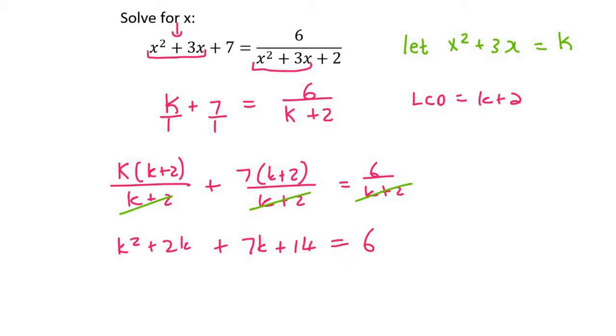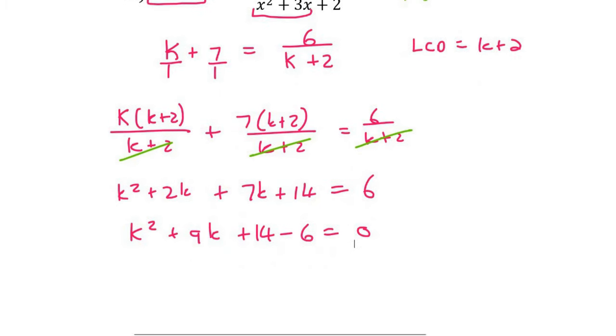So we're happy because we don't want to get that. Now we're just going to solve for k, pretending that it looks like it's the same as x. So I'm going to bring this 6 over. And so that would give us k squared plus 9k plus 8. Now, this can easily be factorized as k plus 8 and k plus 1. So therefore, k is minus 8 and k is minus 1.